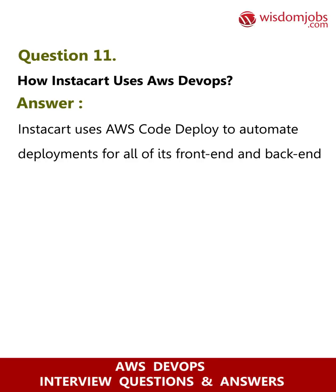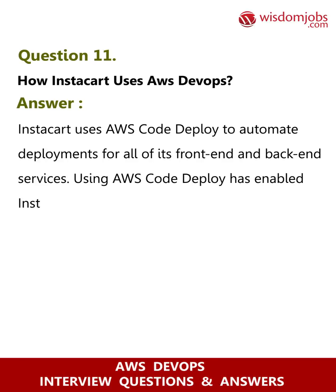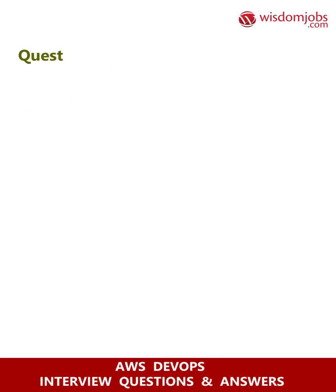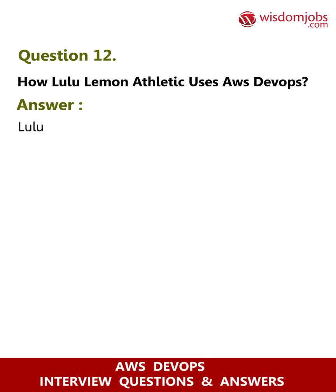Question 11: How does Instacart use AWS DevOps? Answer: Instacart uses AWS CodeDeploy to automate deployments for all of its front-end and back-end services. Using AWS CodeDeploy has enabled Instacart developers to focus on their product and worry less about deployment operations.